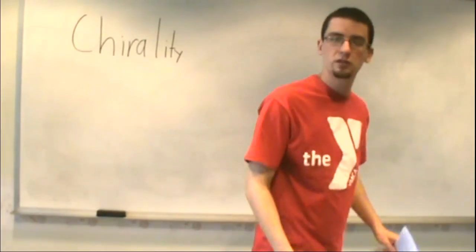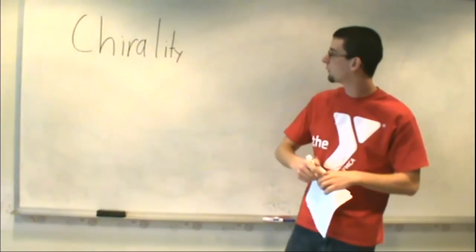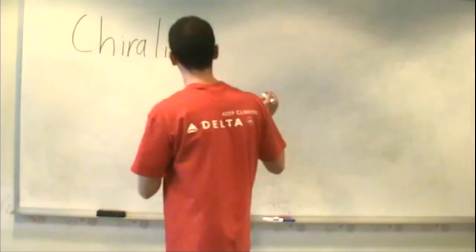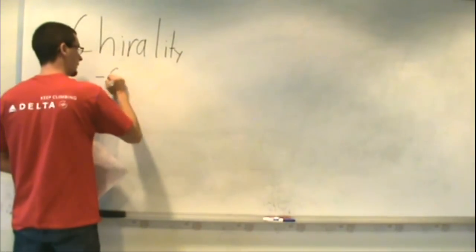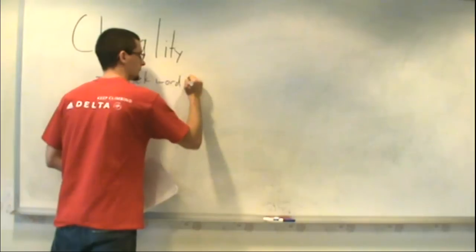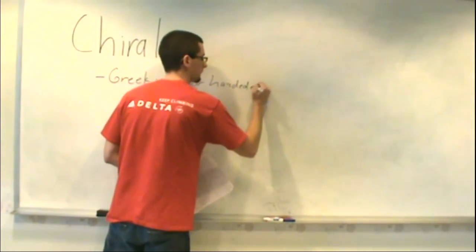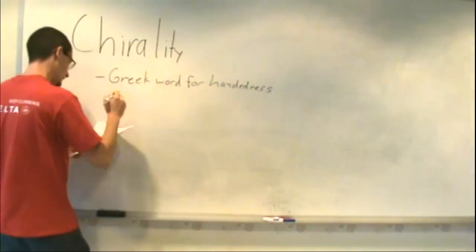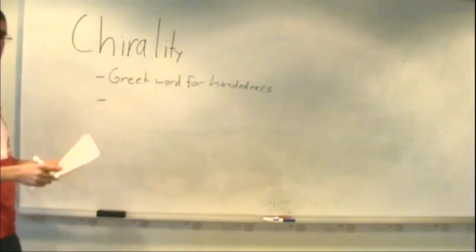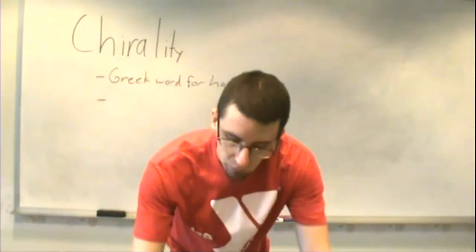So today we're going to cover how to determine if something is chiral, using Lewis structures to show chirality, and things along those lines. Before we do that, we have to cover what chirality is — it's the Greek word for handedness. What results are basically two mirror images of one another, and they're non-superimposable.